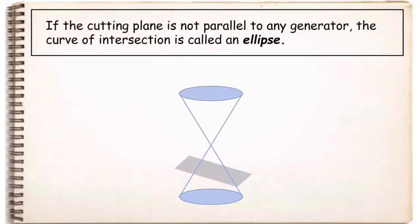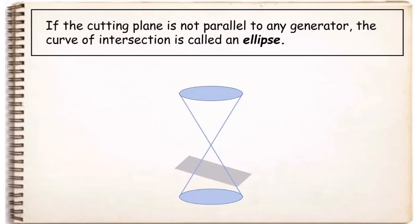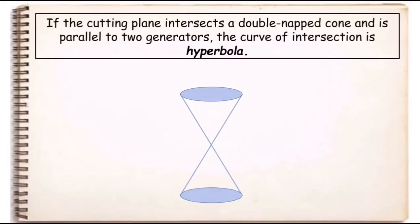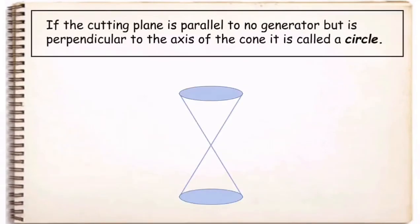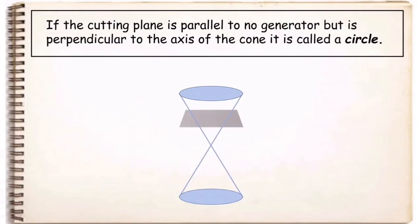If the cutting plane is not parallel to any generator, the curve of intersection is an ellipse. On the other hand, if the cutting plane intersects a double-napped cone and is parallel to two generators, the curve of intersection is a hyperbola. We have a circle if the cutting plane is not parallel to any generator but is perpendicular to the axis of the cone.